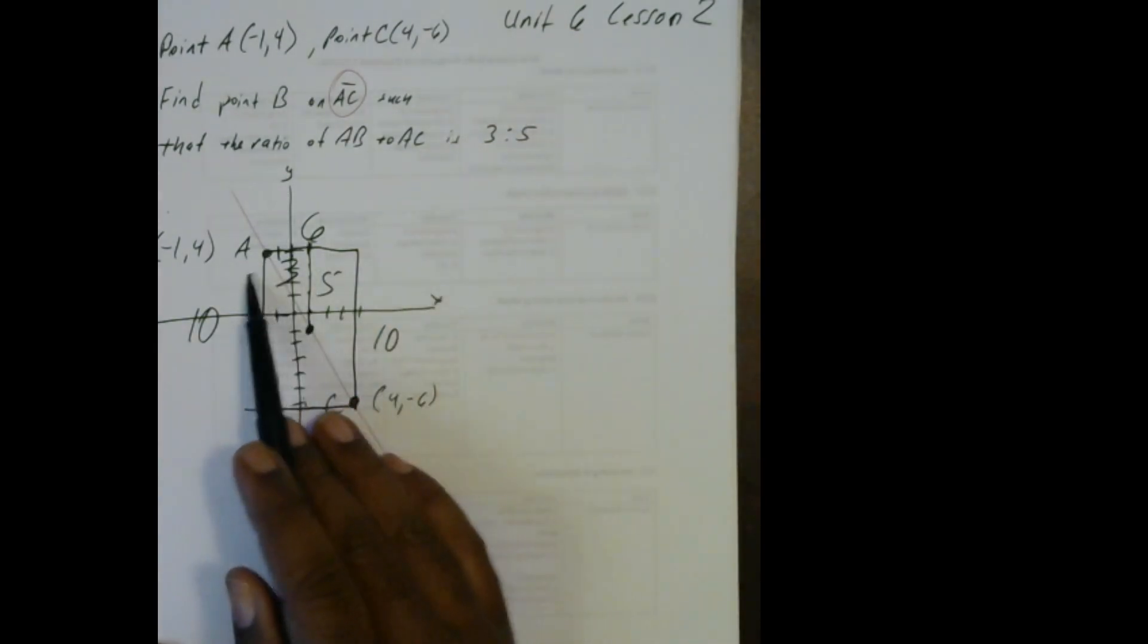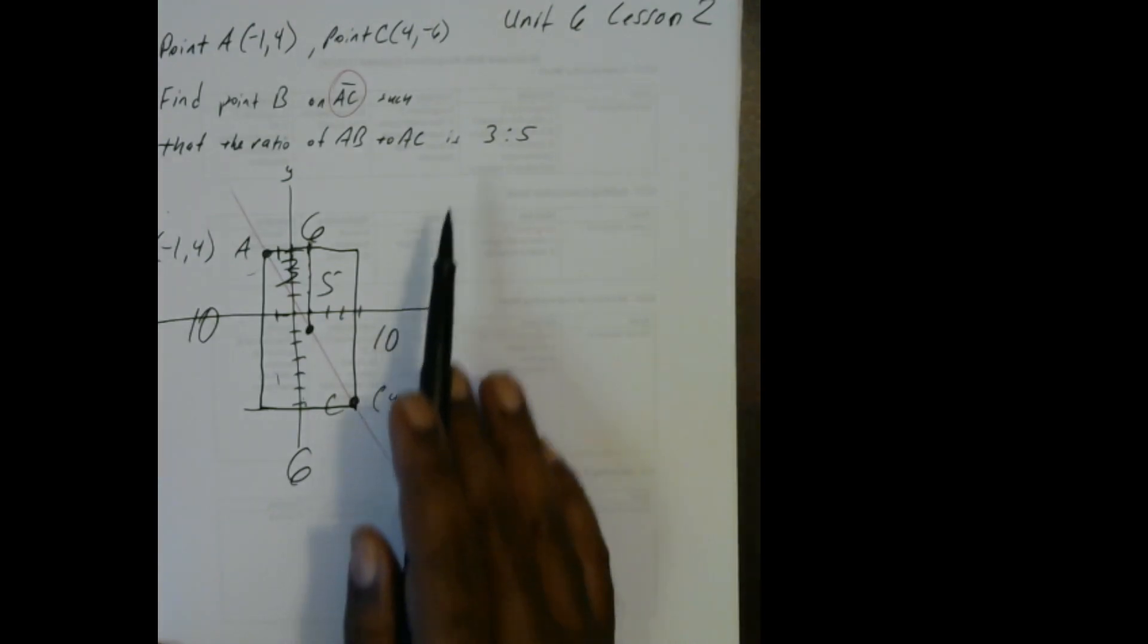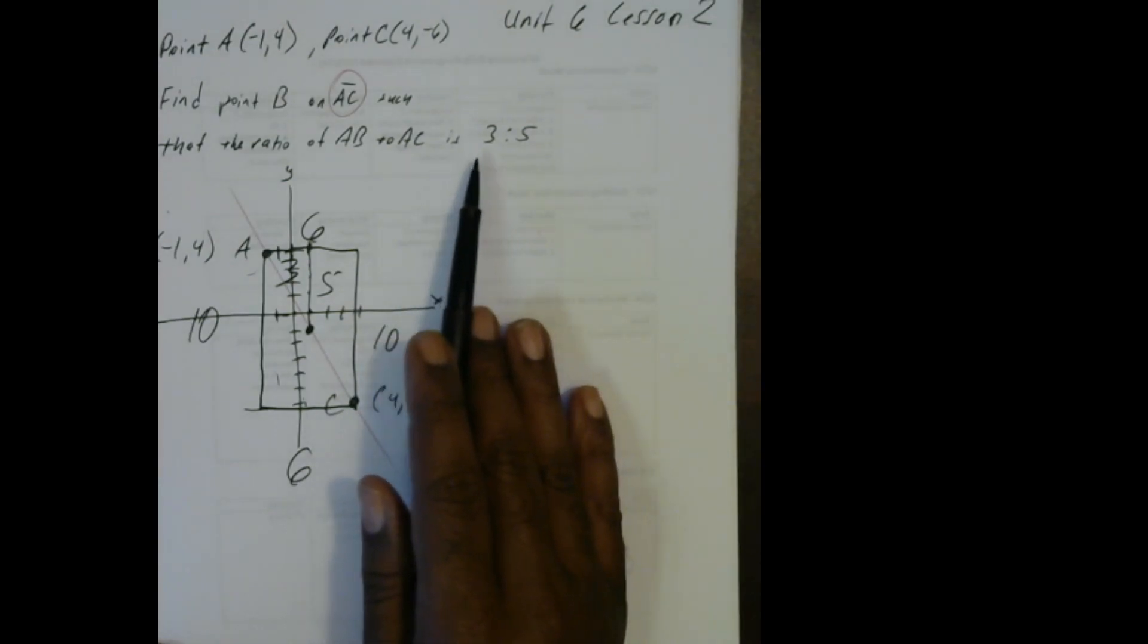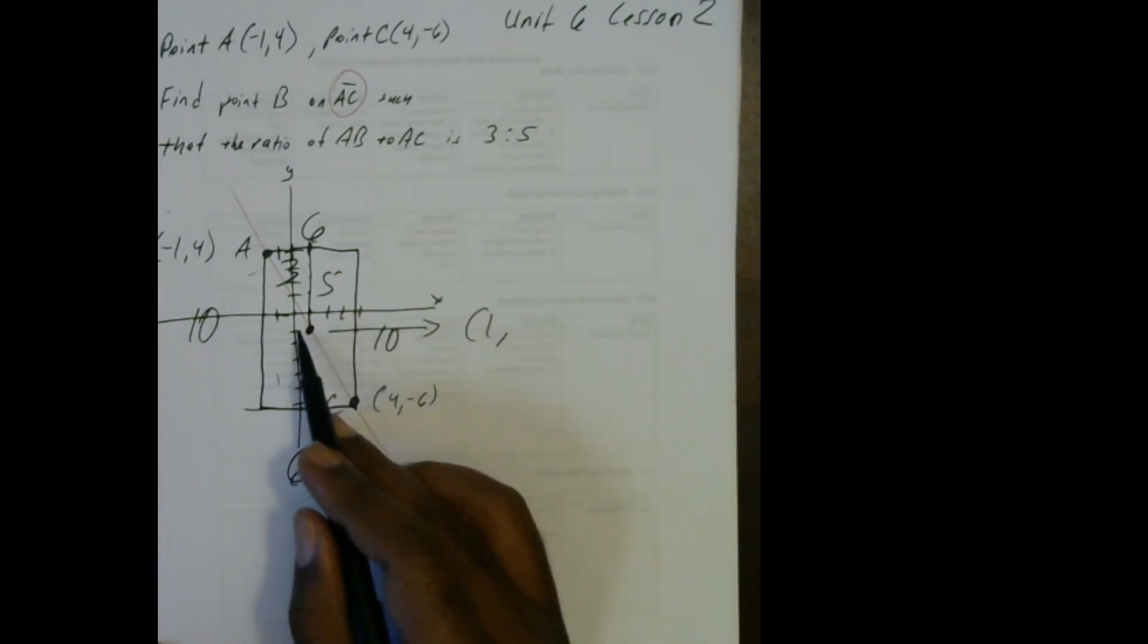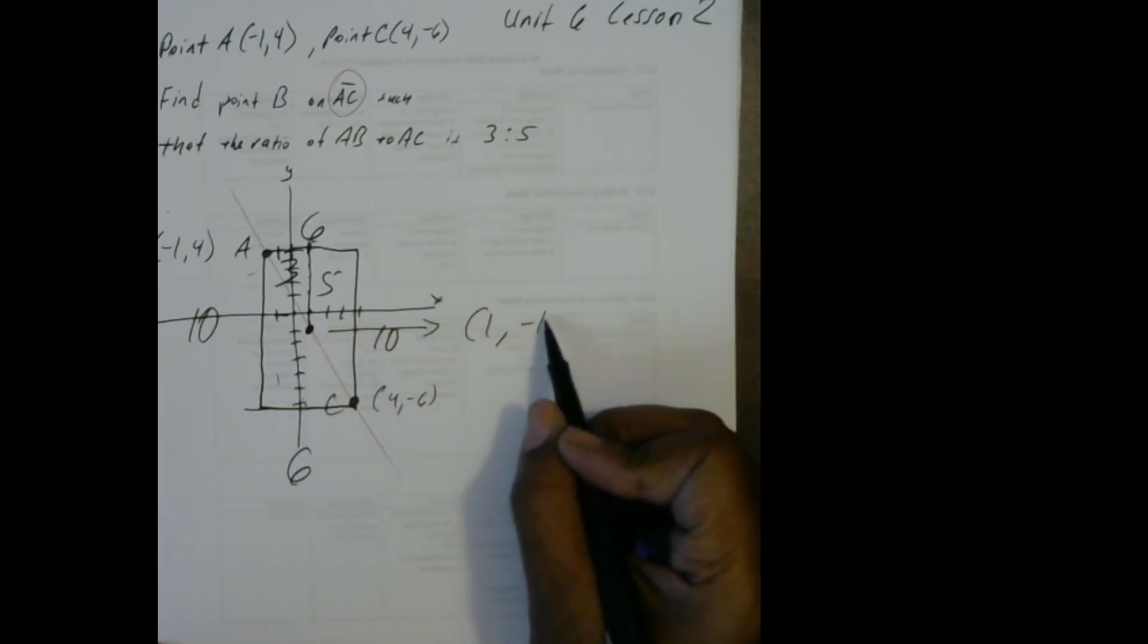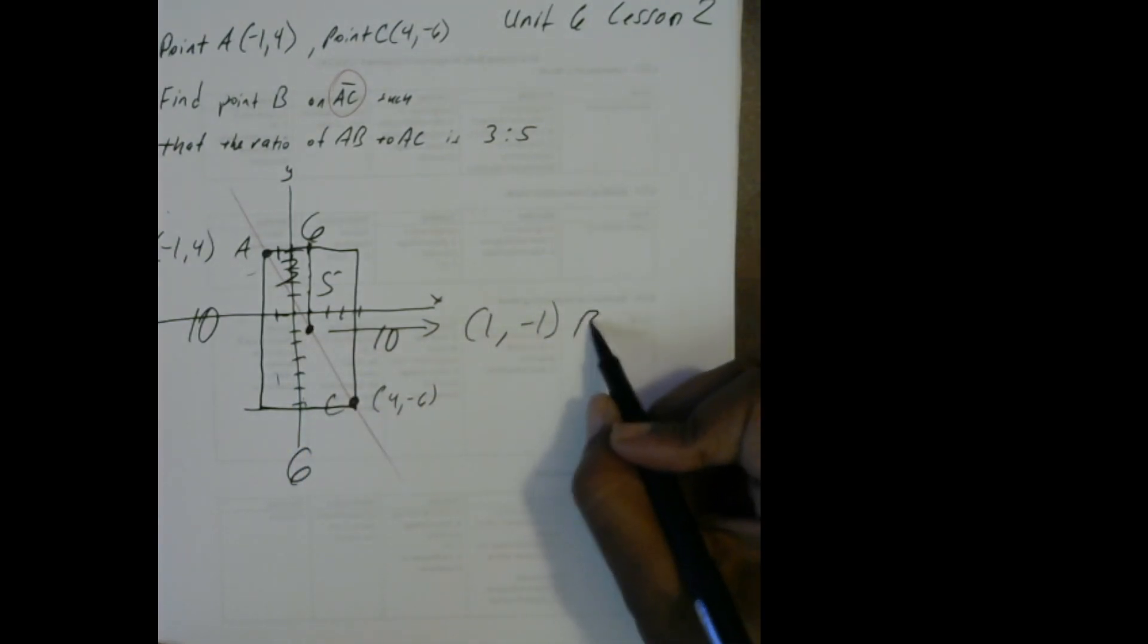So instead of 6 over 10 down, which is the ratio that's being used right now from A to C, we're going to get the B of 3 to 5 ratio, which is going over 3 and then down 5. And this new point right here looks like x is 1 and y is negative 1. So we're going to call it B. And that's our B.